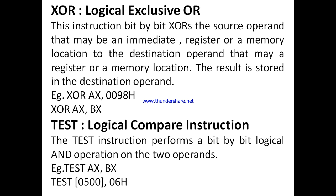Next is XOR — logical exclusive OR. This instruction bit by bit XORs the source operand, that may be an immediate, register, or a memory location, to the destination operand, that may be a register or a memory location. The result is stored in the destination operand. For example: XOR AX, 0098h, or XOR AX, BX — performing logical exclusive OR.